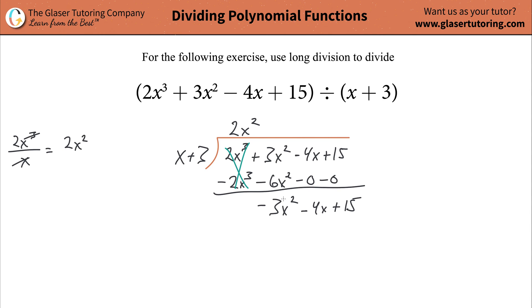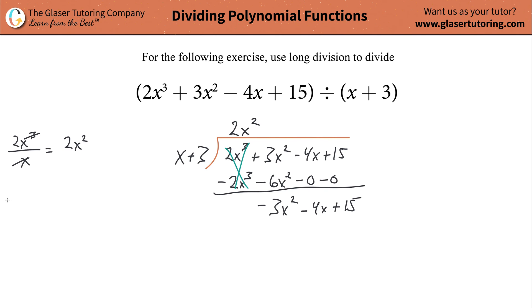Now we're going to do the same process. You're going to look at the x value in the divisor and divide it into the term with the highest power of x. The x's cancel, so you're left with negative 3x. That negative really becomes a subtraction sign, so that's going to be the next term of your quotient: negative 3x.